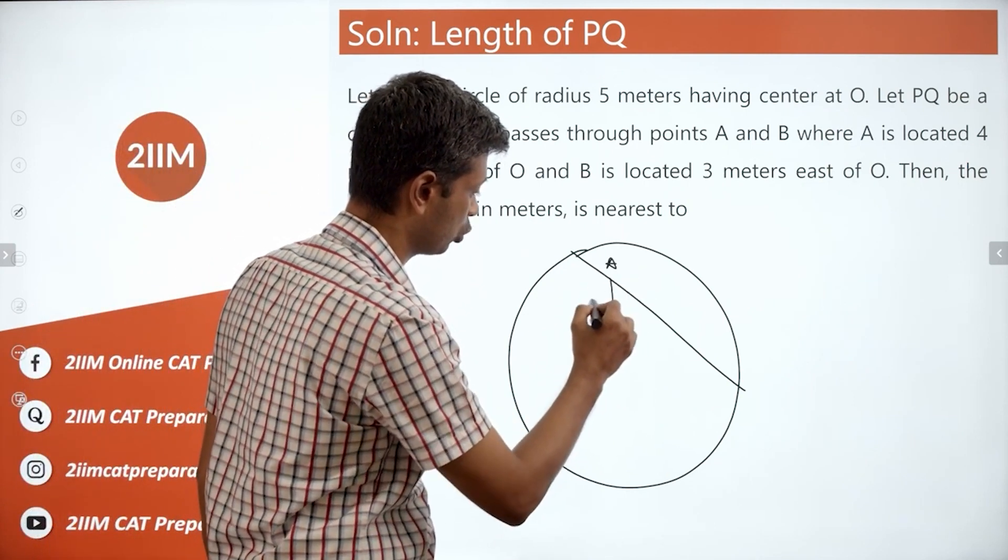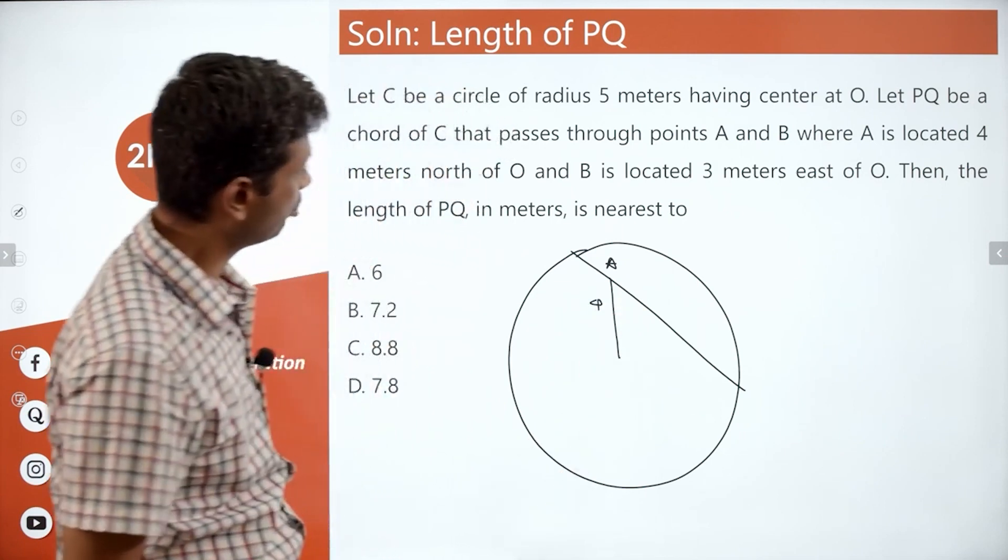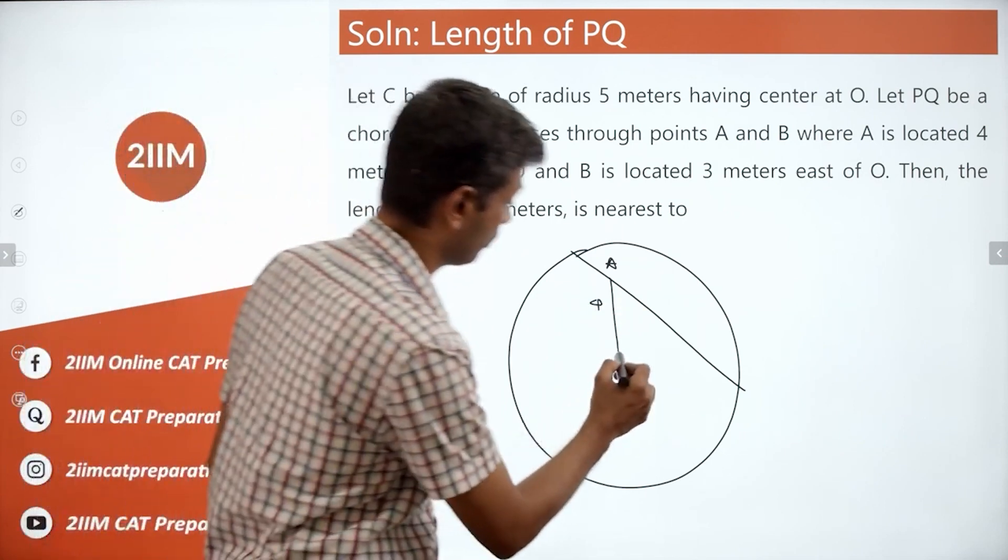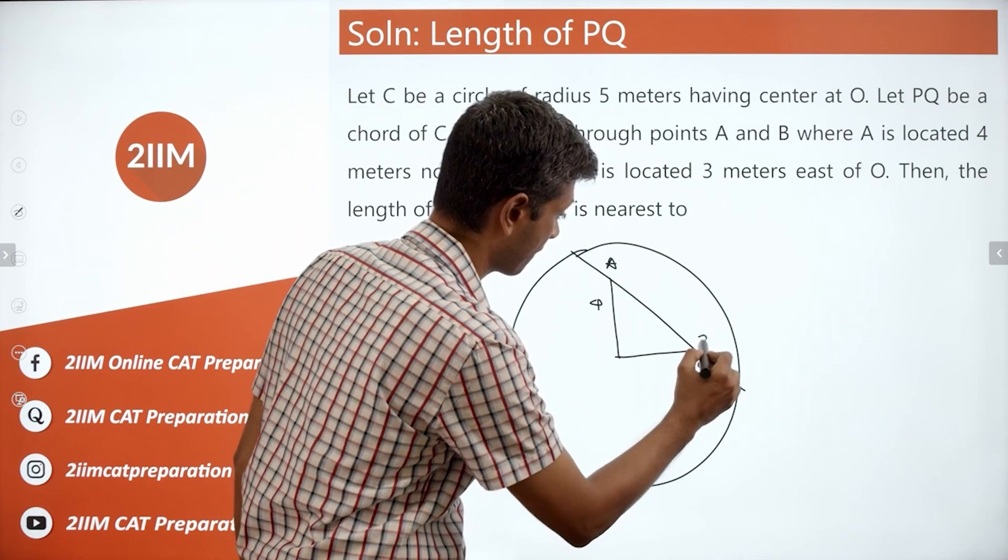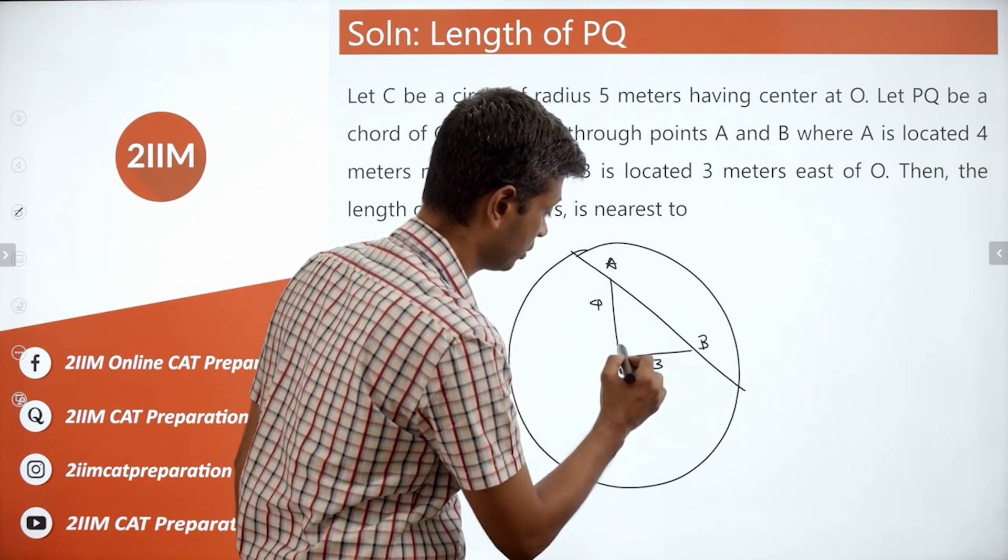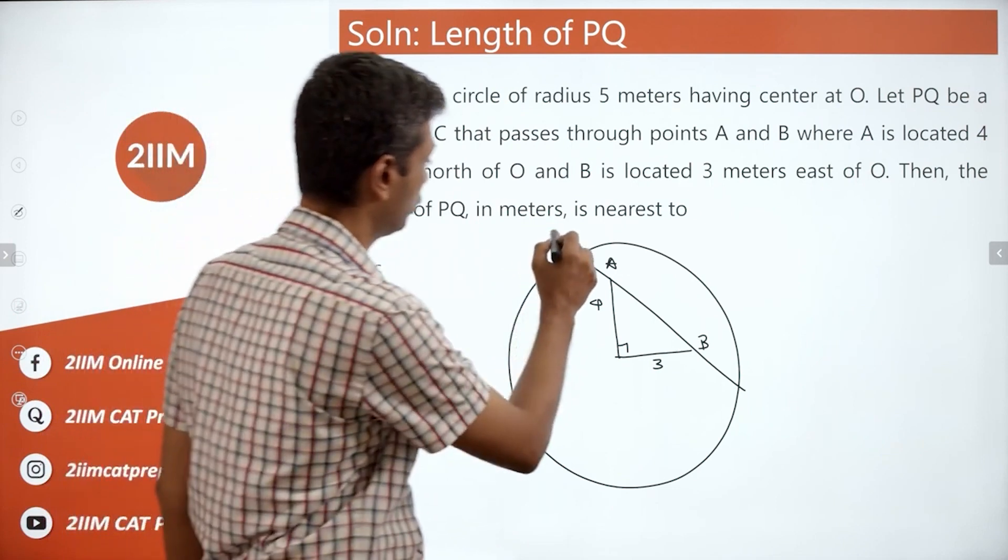So this is A, 4 meters north, and B is located 3 meters east of O. B, 3 meters east, therefore this is 90 degrees. This is PQ.